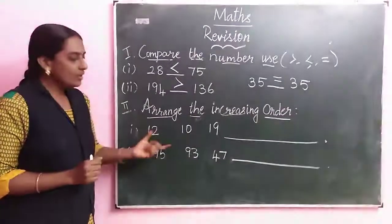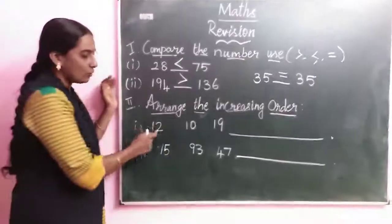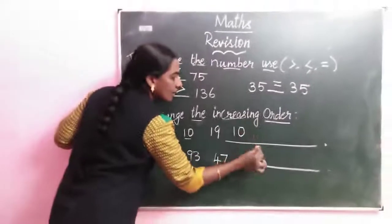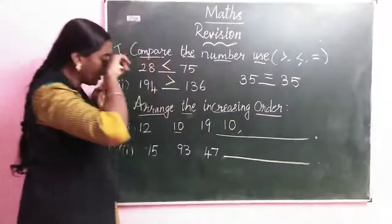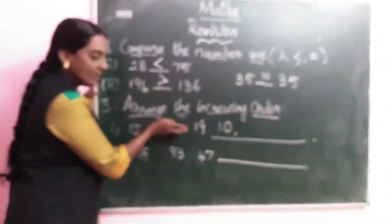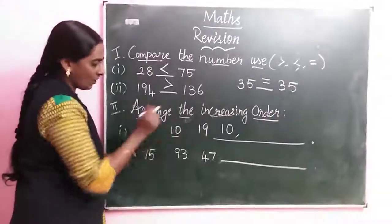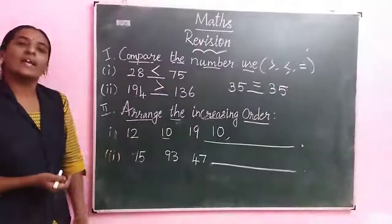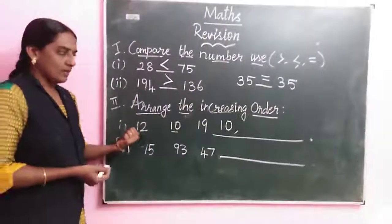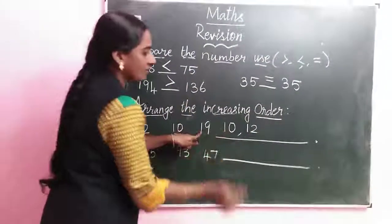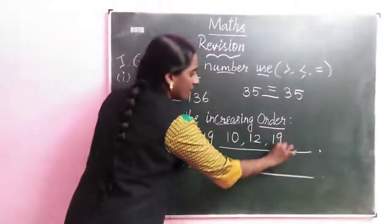So now which is the small number? 12, 10, 19. 10. So first start with 10. Next we are using the next number. Compare these numbers. Take these two numbers: 12, 19. So next, is 12 a big number or 19 a big number? 12.